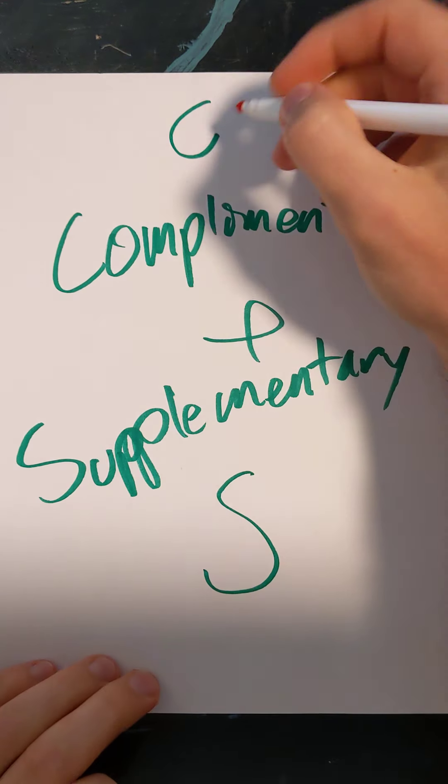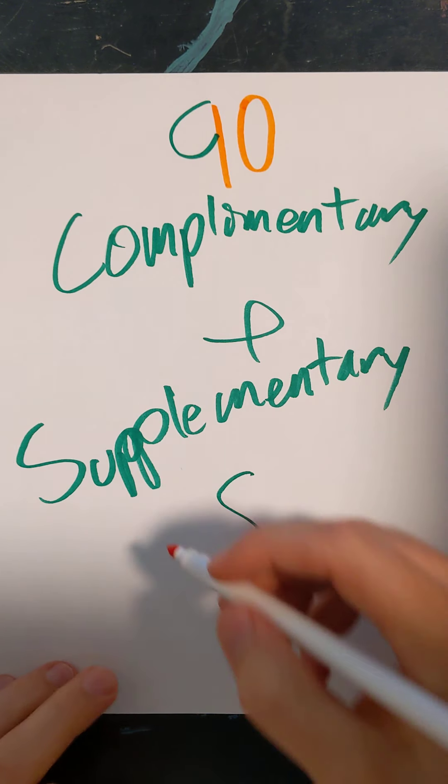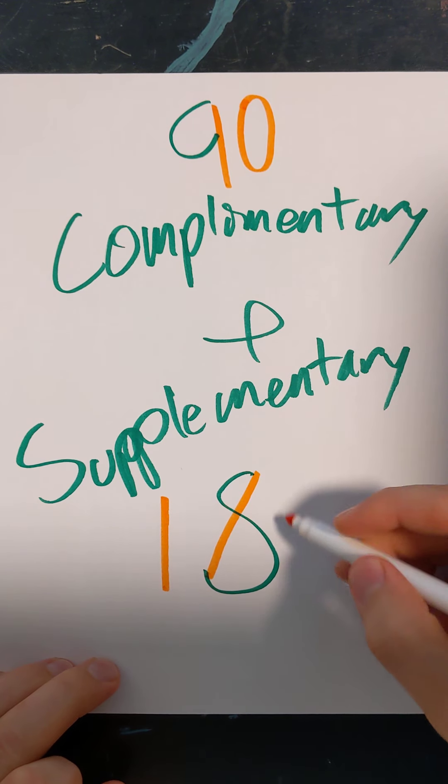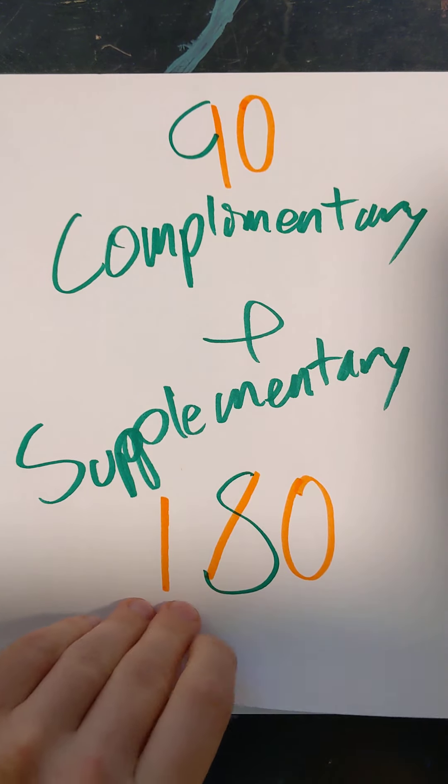Complementary angles are any two angles that add up to 90 degrees. Supplementary angles are any angles that add up to 180 degrees. Let's work some examples.